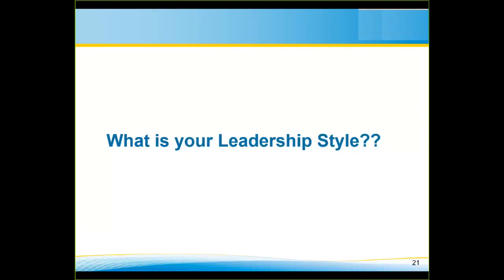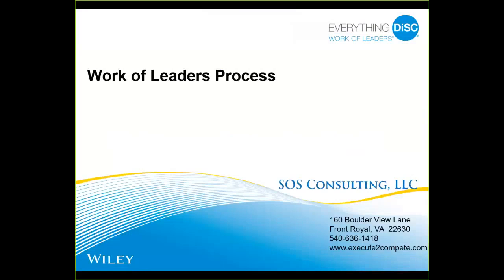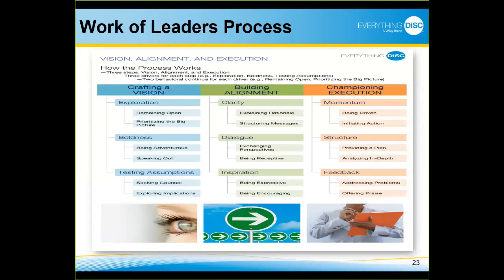How does your style tie into your work as a leader? There is a process of being a leader — very appropriate for quality professionals, since all work is a process. Being a leader is a process with three steps: Step one, crafting a vision; step two, building alignment; step three, championing execution. Within each step there are three drivers or best practices, and within each best practice there are behaviors on a continuum.